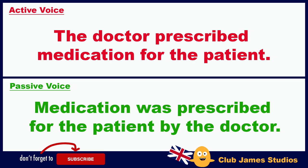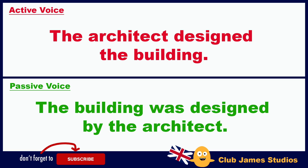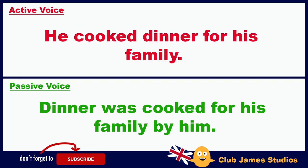The doctor prescribed medication for the patient. / Medication was prescribed for the patient by the doctor. The architect designed the building. / The building was designed by the architect. He cooked dinner for his family. / Dinner was cooked for his family by him.